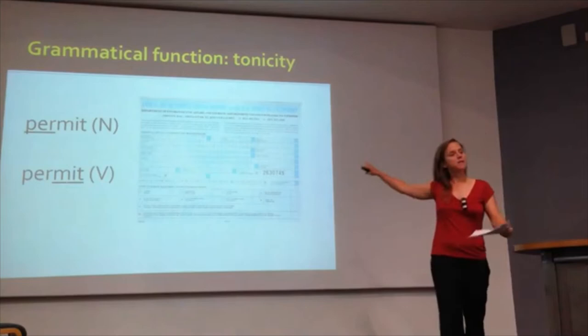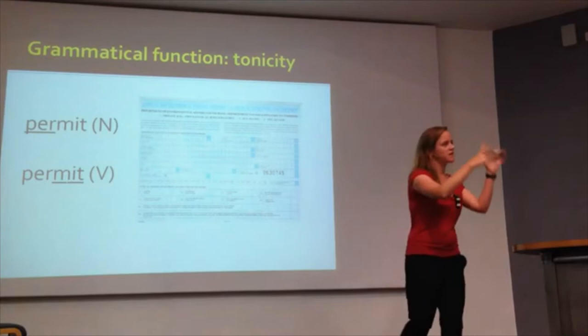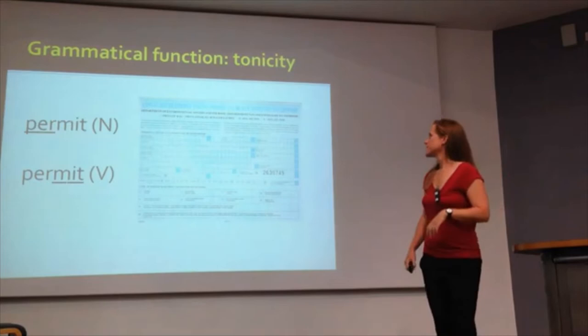Another example: 'this is a permit' — a noun with stress on the first syllable. 'This permit permits you to fish' — the same word used as a verb shifts to the second syllable. So that's the grammatical function and tonicity: turning nouns into verbs and verbs into nouns using the intonation pattern.